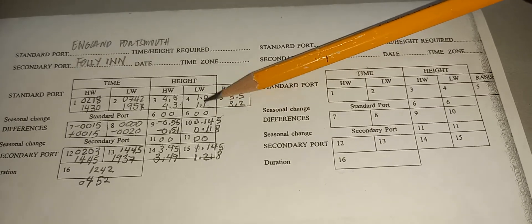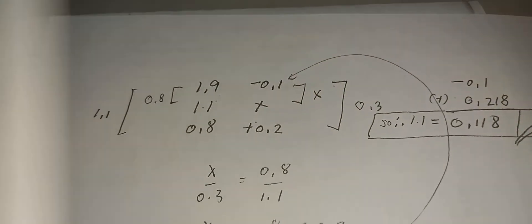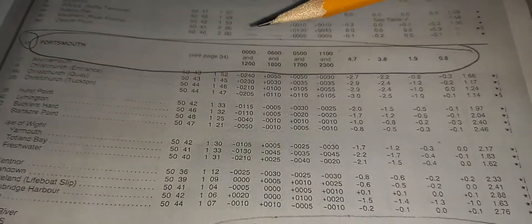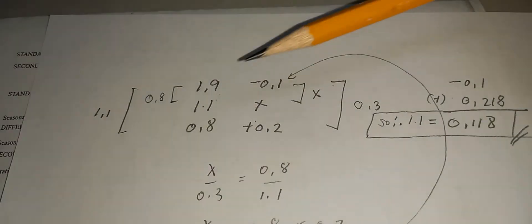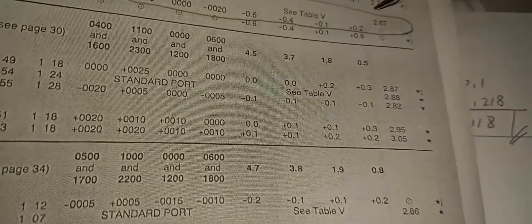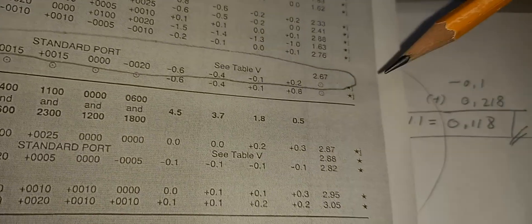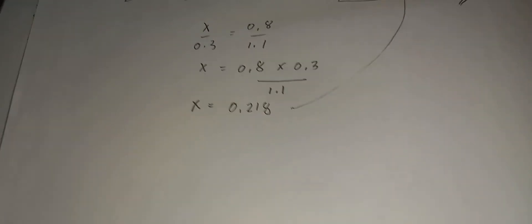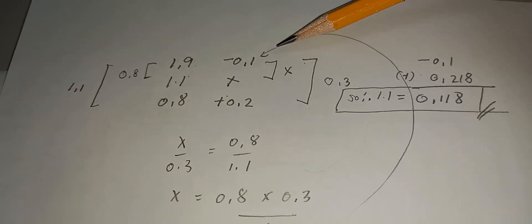Then to get the value for 1.1, again interpolation — it is in the middle of 1.9 and 0.8. The equivalent of 1.9 is negative 0.1 and 0.8 is positive 0.2. We get the value of 0.218, then apply it to negative 0.1.